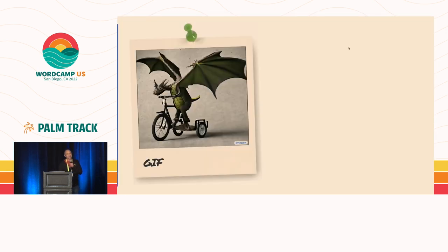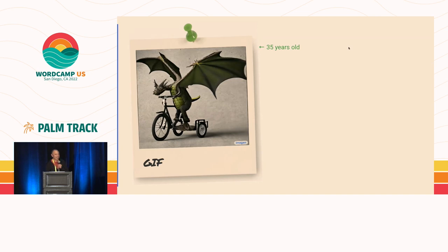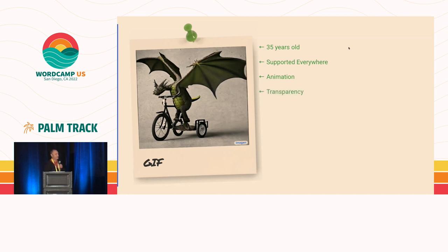Let's jump into the legacy formats. All the images you see here were generated by Imogen, so I've got some fun images for you. The GIF format is 35 years old, and when that came out, pretty much we had everything we needed for the web. It's supported everywhere. You can use a GIF for anything. It has animation and transparency, so you could show the background through the back of the image. And it had lossless compression, so you could get your image a little smaller, but it was exactly the same information — you didn't lose anything.